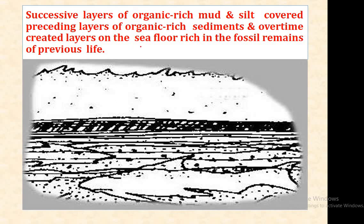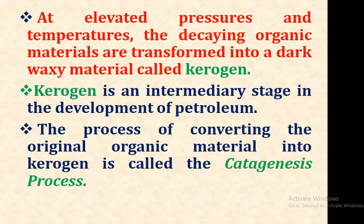Successive layers of organic-rich mud and silt cover preceding layers of organic-rich sediments, and over time create layers on the sea floor rich in fossil remains of previous life. At elevated pressure and temperature, the decaying organic materials are transformed into a dark waxy material called kerogen.